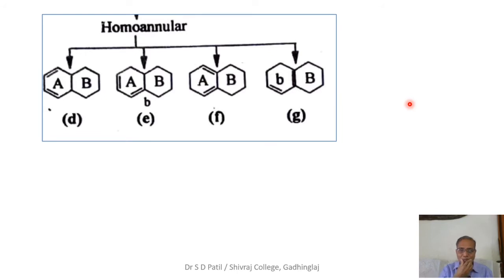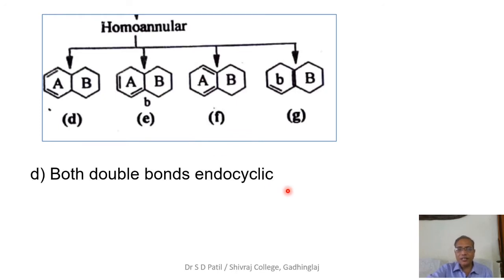These are examples of homoannular dienes. Structures D, E, F, and G are four homoannular dienes. In structure D, both the double bonds are endocyclic. There are two rings, A and B, and both double bonds are present inside ring A, so it is an endocyclic structure with no exocyclic bond.